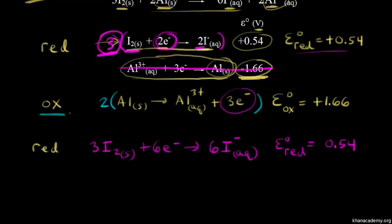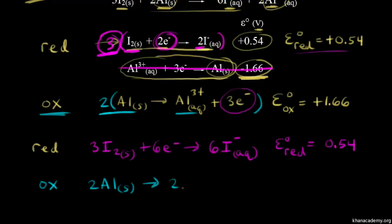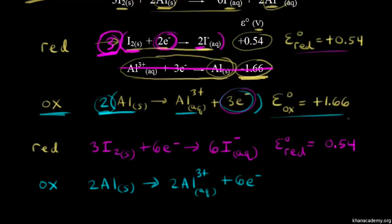Next, we multiply the oxidation half reaction by two: 2Al gives 2Al³⁺ plus six electrons. Two times three gives us six electrons. Again, we do not multiply our standard oxidation potential by two, so it remains positive 1.66 volts.